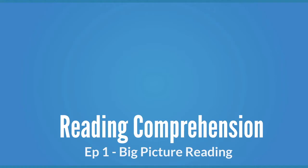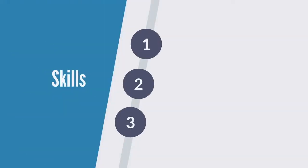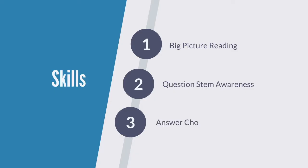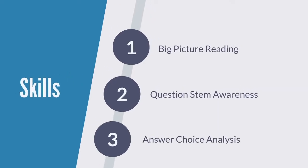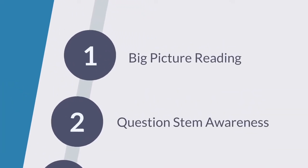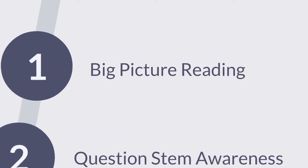Hey everybody, it's Patrick from LSAT Lab. We're going to talk about big picture reading, which is really one of the big three skills you're working on with Reading Comp. We've got to get better at what we extract from the passage, sort of like briefing a case in law school. We've got to become more aware of the various question types because they have different nuances, different strategies, different difficulty levels. And we've got to be masters of the answers because a lot of times an answer is wrong for one word. Today we're just going to focus on the big picture part and think about some tools for getting interested, finding big ideas, and retaining them.